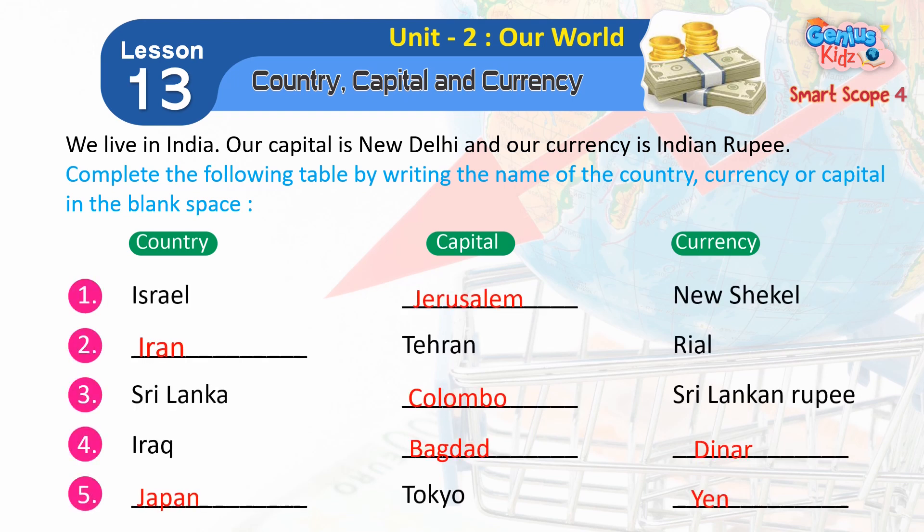1. Israel — Jerusalem — New Shekel. 2. Iran — Tehran — Rial.